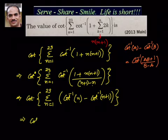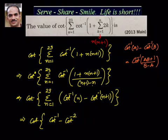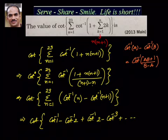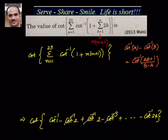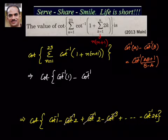We now have cot of sigma n equal to 1 to 23 of [cot inverse n minus cot inverse(n+1)]. Substituting values: when n=1, we get cot inverse 1 minus cot inverse 2; next, cot inverse 2 minus cot inverse 3; and so on. The last term gives cot inverse n+1, which is cot inverse 24. All intermediate terms cancel, leaving cot inverse 1 minus cot inverse 24.